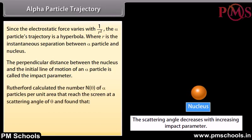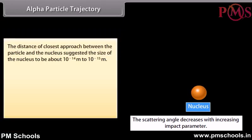Rutherford calculated the number N(θ) of alpha particles per unit area that reached the screen at a scattering angle θ, and found that N(θ) is inversely proportional to sin⁴(θ/2). The distance of closest approach between the particle and nucleus suggested the size of the nucleus to be about 10⁻¹⁴ to 10⁻¹⁵ meter.